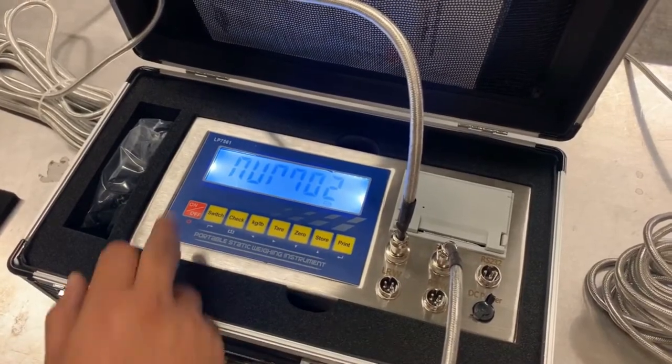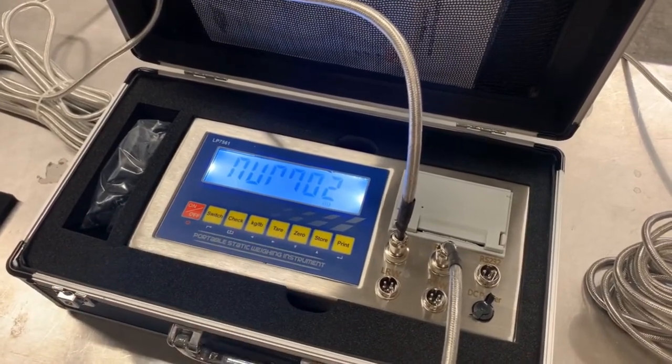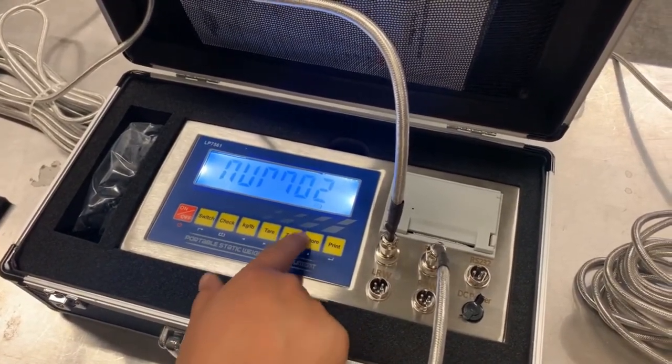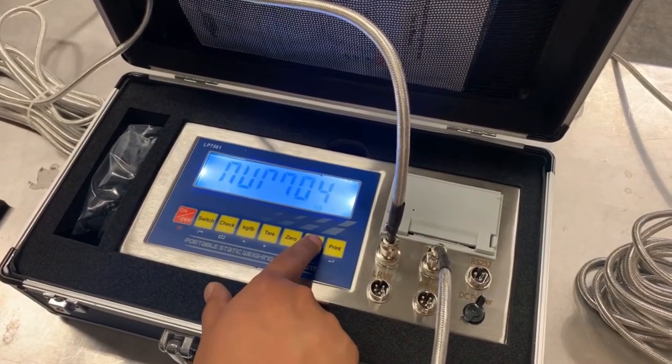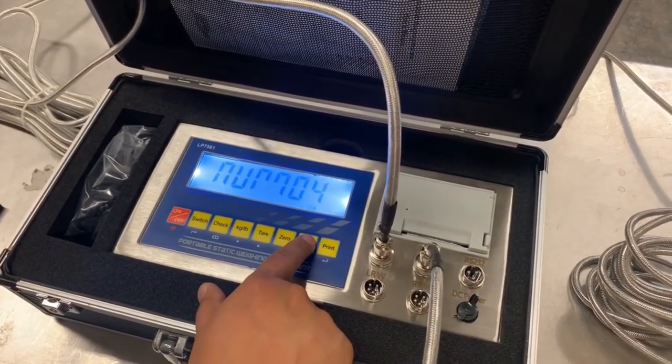This area will ask you how many pads do you want to calibrate. Right now it's on two, but you can move up to three and four. Normally with weight pads it's either a two pad system or a four pad system. Today we're going to calibrate two pads.